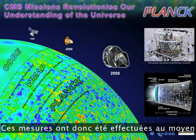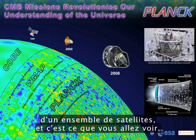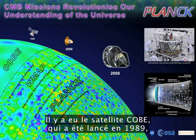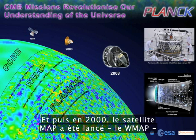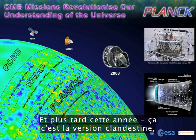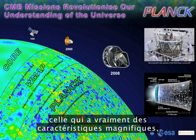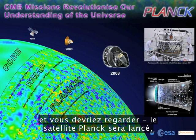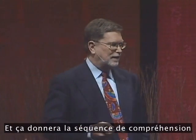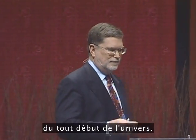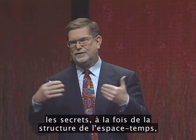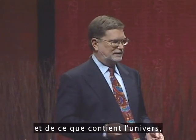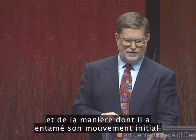The measurements were done by a set of satellites. There was the COBE satellite, launched in 1989, which discovered these variations. Then in 2000, the WMAP satellite was launched and made somewhat better pictures. And later this year, the Planck satellite will be launched — it has some beautiful design features — and will make very high-resolution maps. That will complete the sequence of understanding the very beginning of the universe. The variations told us secrets about the structure of space-time, the contents of the universe, and how the universe started in its original motions.